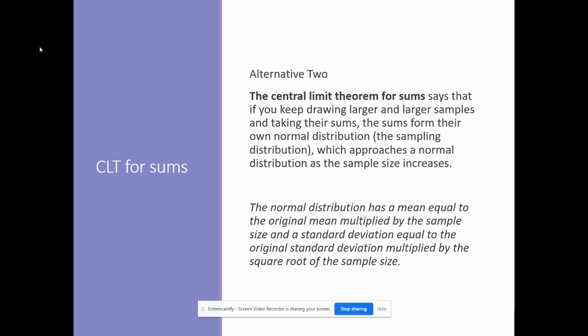The second part of the CLT says that if you keep drawing larger and larger samples and for each of those samples you take the sum – all you're doing is adding it up – those sums are going to form their own normal distribution. So let's think of this example.